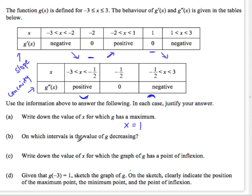On which intervals is the function g decreasing? You can see right here that this represents a slope that's negative, which means it's decreasing. So, that's negative 3 is less than x is less than negative 2. And 1 is less than x is less than 3.